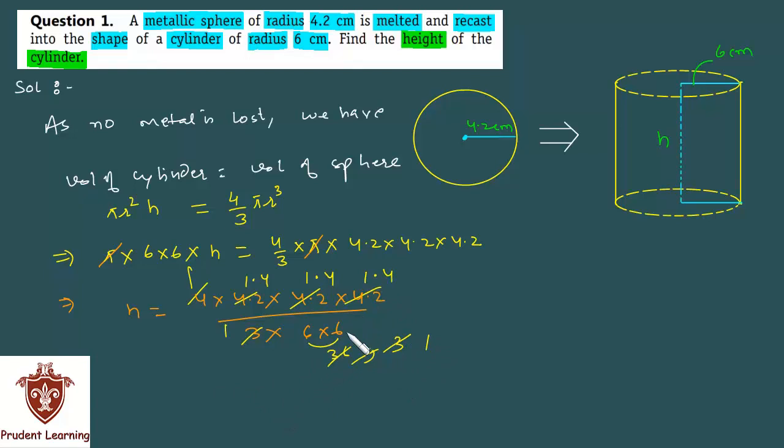So we are left with h equals 1.4 × 1.4 × 1.4, that is cube of 1.4, which gives us h as 2.74 cm. Therefore, the height of the cylinder is 2.74 cm. This completes our solution.